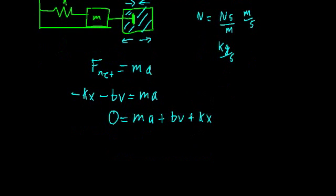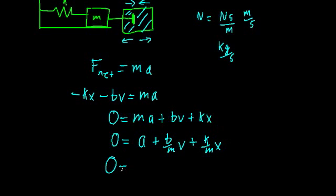Now we can divide by M just to put in a standard form. So zero is equal to A plus B over M times V plus K over M times X. Now if the motion is only in one direction, let's just say the X direction, then we can rewrite acceleration and velocity as the derivatives of X. So we can say that zero is equal to the second derivative of X with respect to time plus B divided by M times the first derivative plus K divided by M times X.